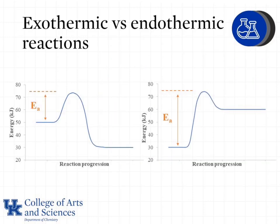Notice the difference in the curves for an exothermic versus an endothermic reaction. Look at the relative height of the left and right sides of the curve: for an exothermic reaction, given on the left, the energy of the products is lower than the energy of the reactants. For an endothermic reaction, given on the right, the energy of the products is greater than the energy of the reactants.